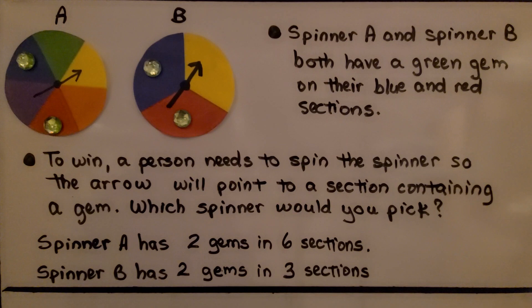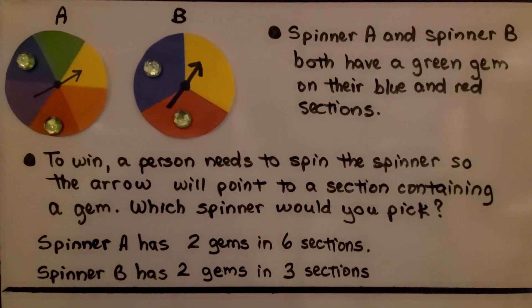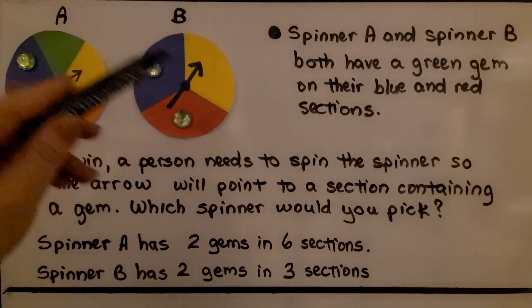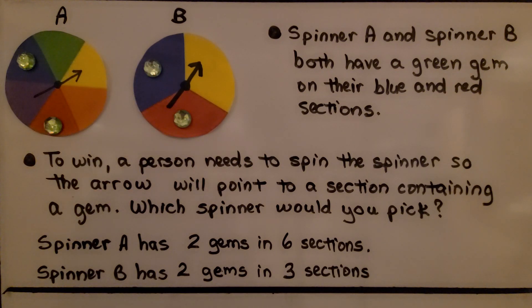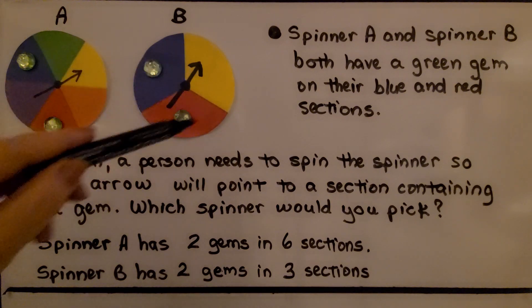Here we have two spinners, and they have gems on them. Spinner A and spinner B both have a green gem on their blue and their red sections. To win, a person needs to spin the spinner so the arrow will point to a section containing a gem. Which spinner would you pick? Well, spinner A has two gems in six sections, and spinner B has two gems in three sections.